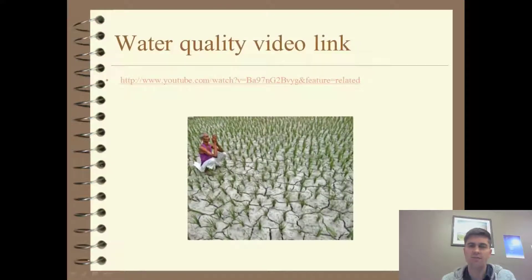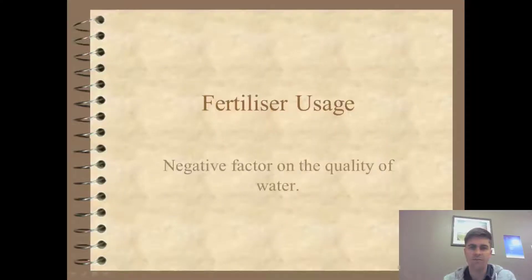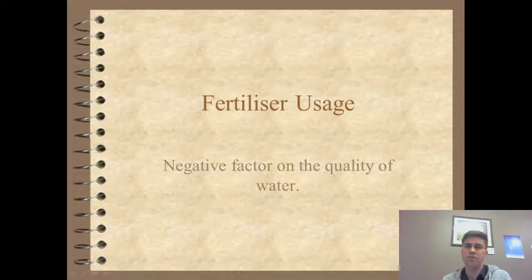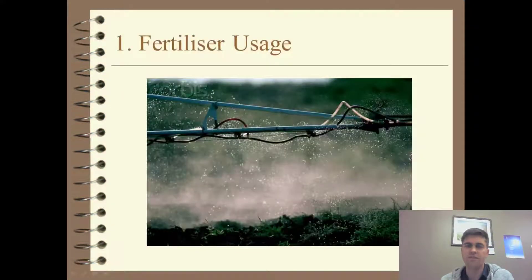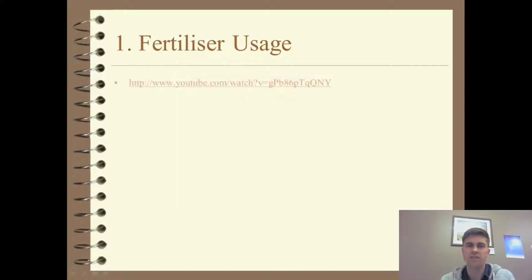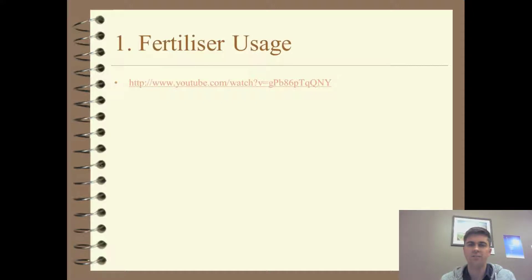There's a good video to look at on water quality — have a quick look at that before going any further. Fertilizer usage is number one: the effect of fertilizer usage on water quality and quantity. Fertilizer can be applied in a number of different ways, via liquid or pellets, and can be put onto crops and make its way into waterways. There's a short YouTube video about fertilizer usage in Los Angeles showing the effect when fertilizer gets into waterways and pollutes drinking water.